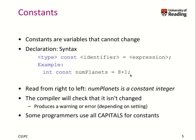How do I read such a declaration? I read it from right to left, so I would say 'numPlanets is a constant integer.' The compiler will check that you do not modify this variable. If you do, it produces either a warning or error depending on the settings. Some programmers use capitals for constants, but that's really up to you.